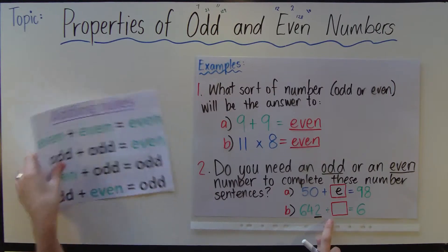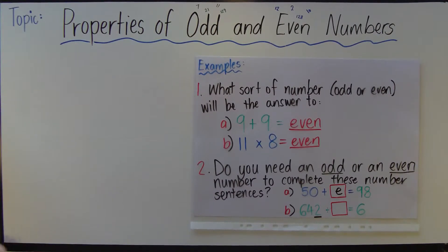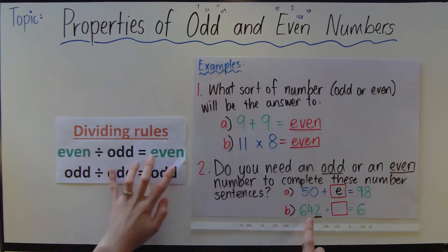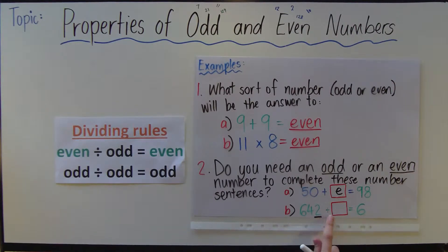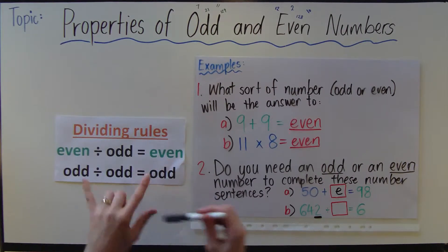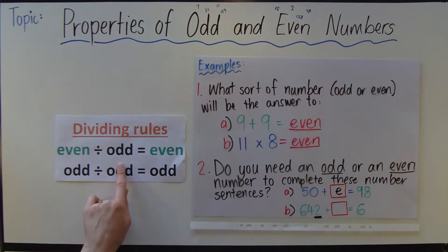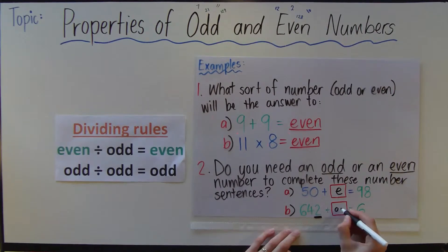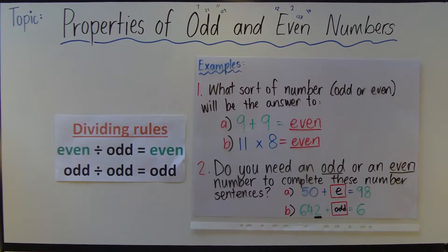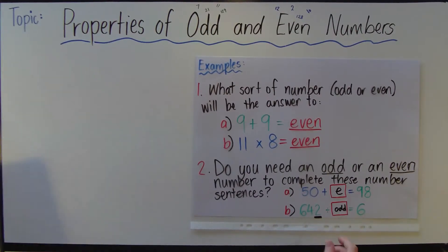Then here we've got a dividing question, so I'll just get out my dividing rules page. 642 divided by something equals 6. For this one here, 642, I'm going to look in the ones column. The digit 2 is an even number, so 642 is in fact an even number. Divided by something equals an even number. That's this rule up here. So the middle number should be, or actually will be, an odd number. So that's as simple as that.